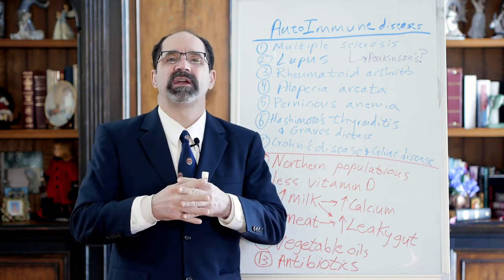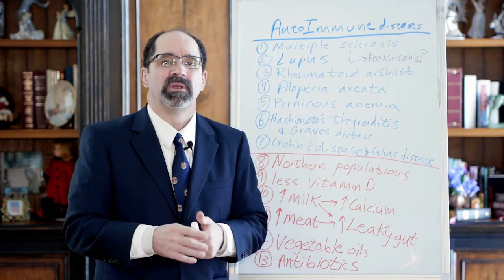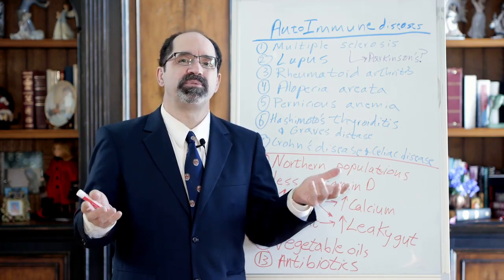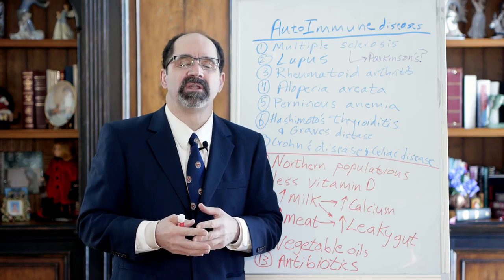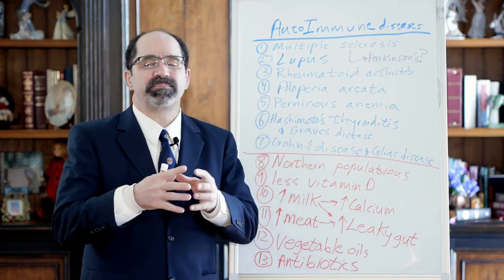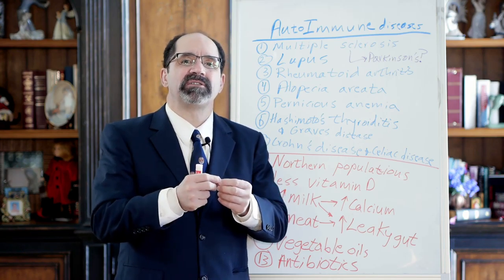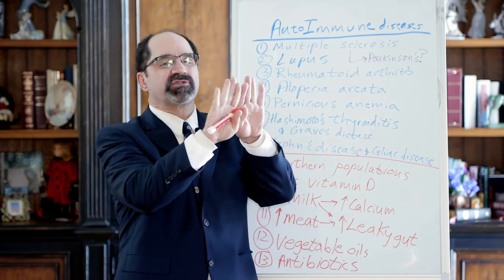And the big thing too with meat lacks fiber, and the lack of fiber means that you get a different type of bacteria in your colon. For example, when you eat the fiber from plants, they produce short-chain fatty acids, the most important one being butyrate, which is a four-carbon fatty acid. And that butyrate feeds the colon lining cells, the enterocytes.